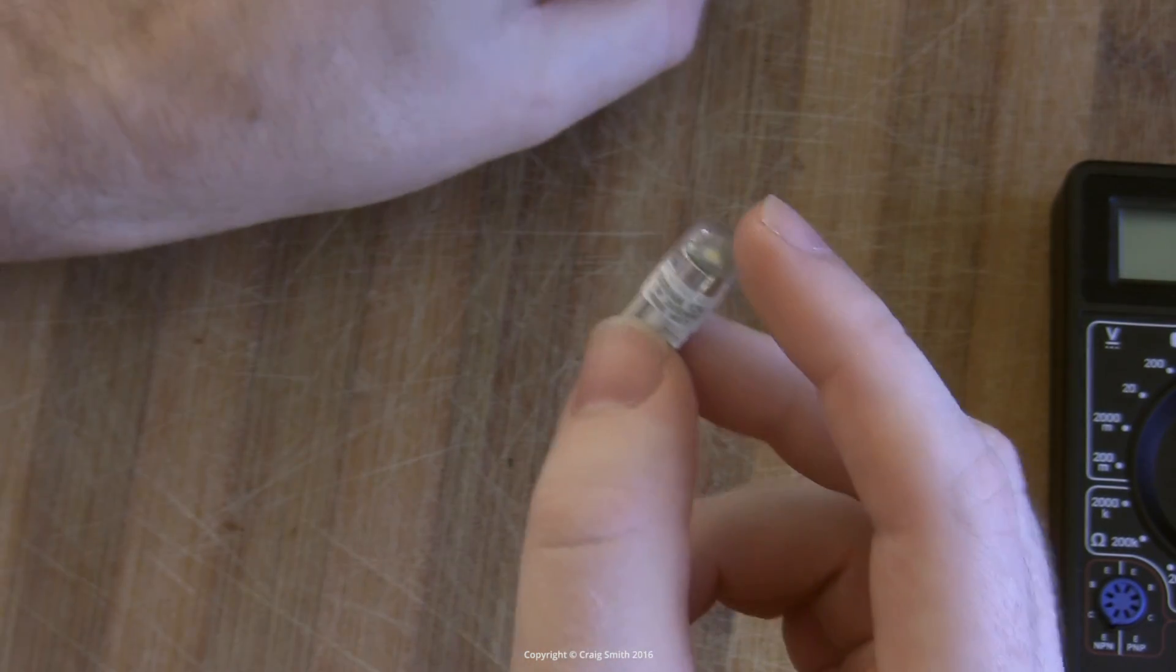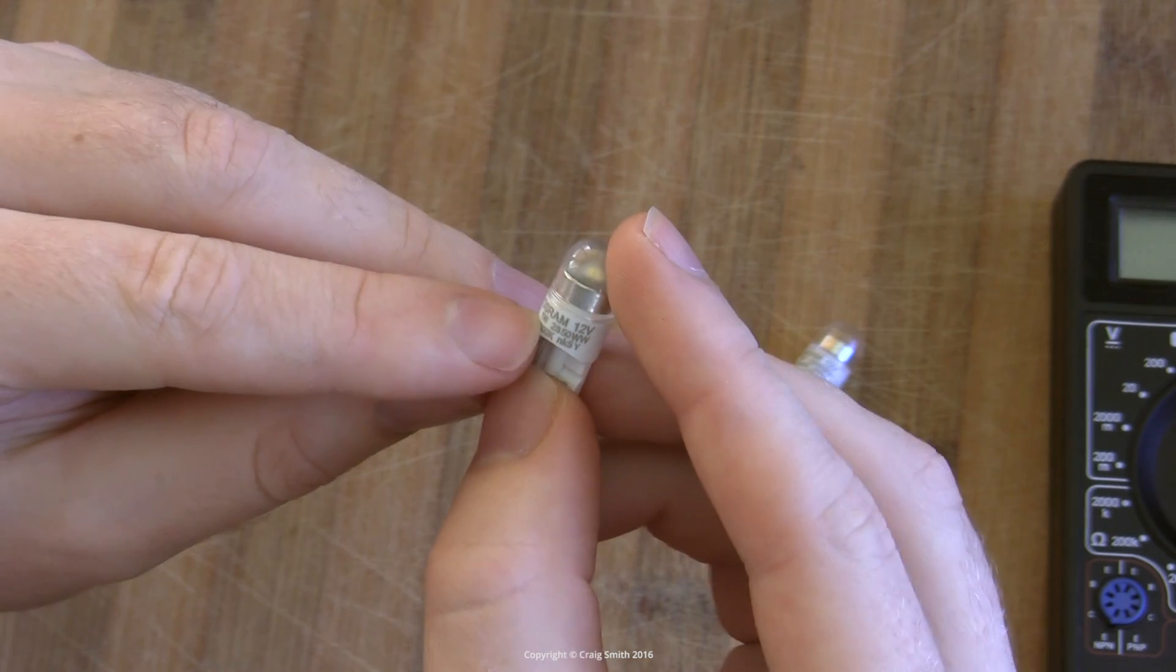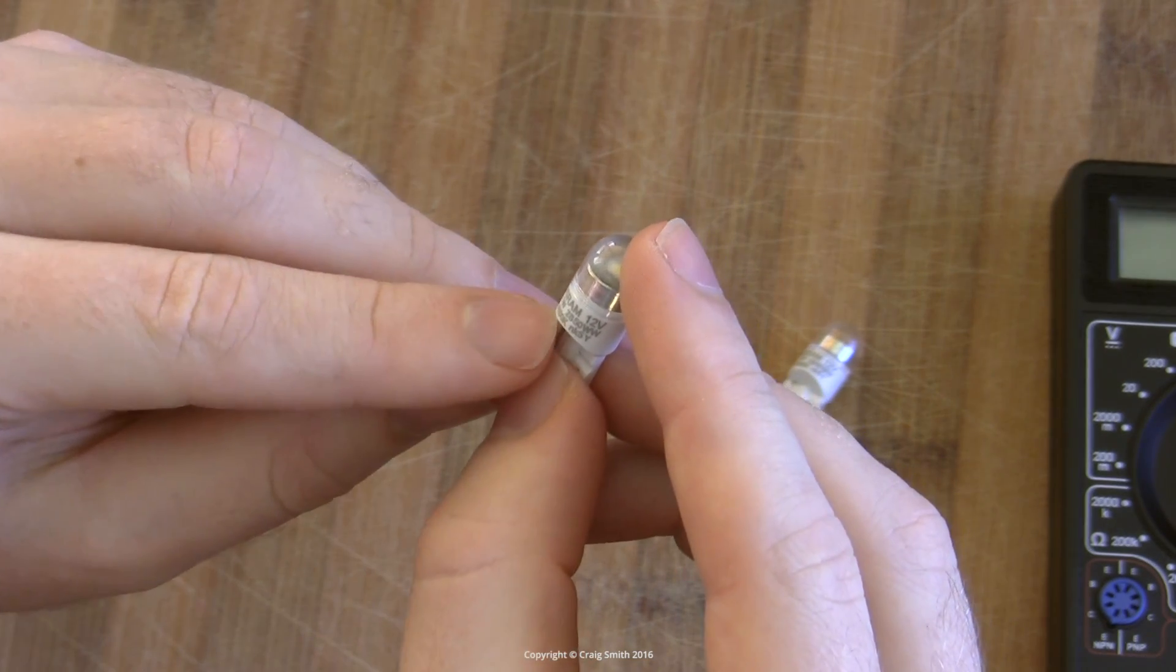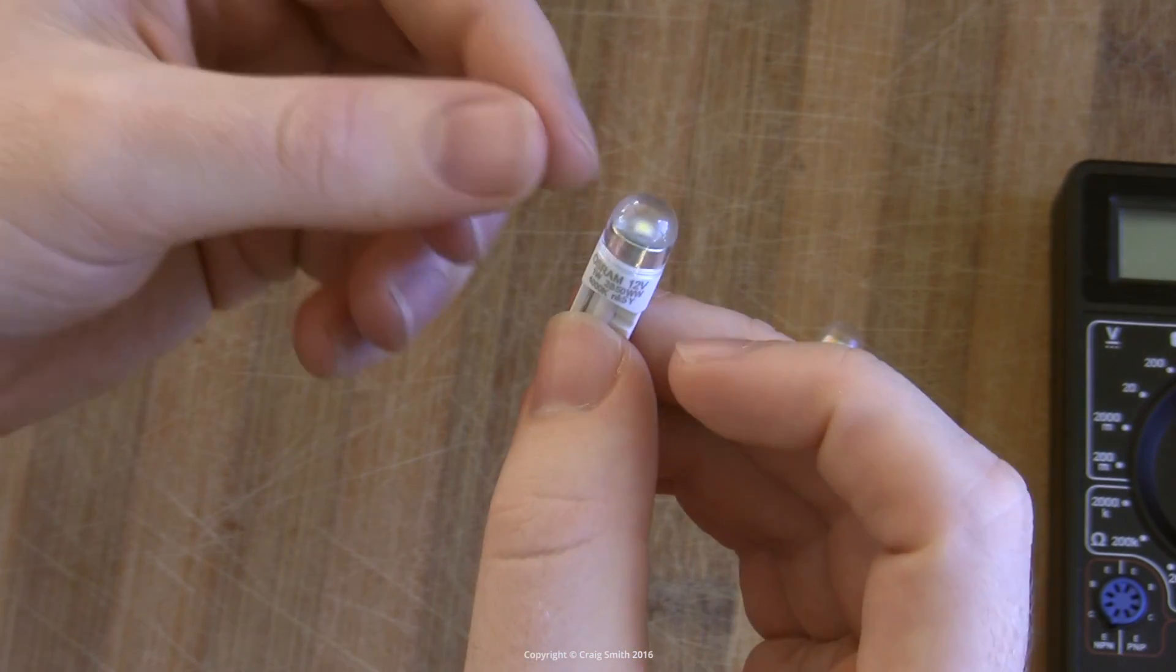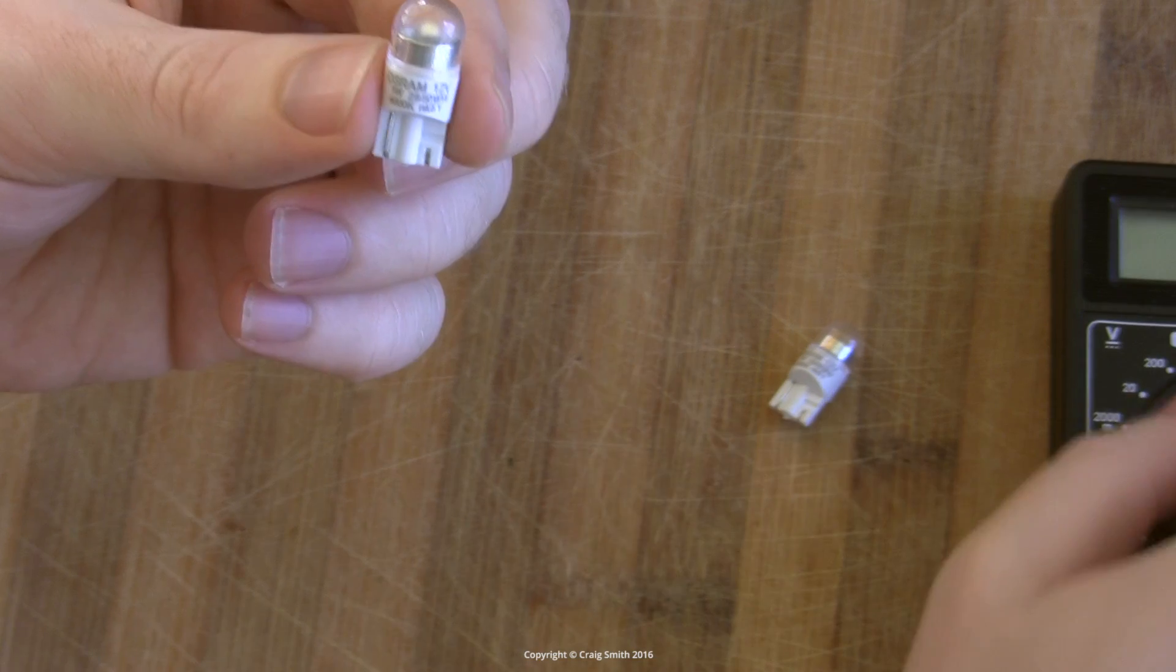If we look on here, it says one watt, whatever that is, 4,000 K. So they're claiming 4,000 K and we will now connect this up to the volt meter and measure its current.